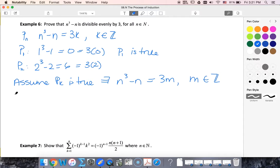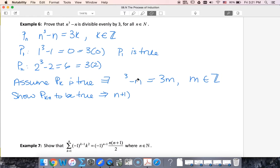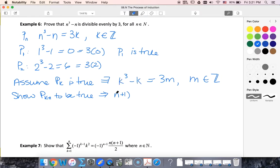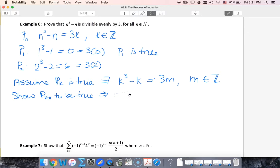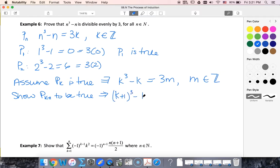All right, so now let's show P sub k+1 to be true. So that implies that (k+1)³ - (k+1) is equal to some other multiple of 3p.